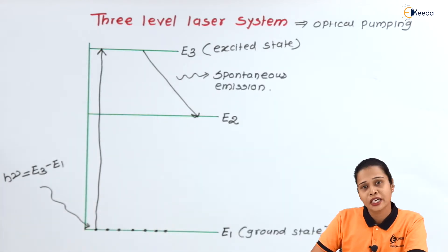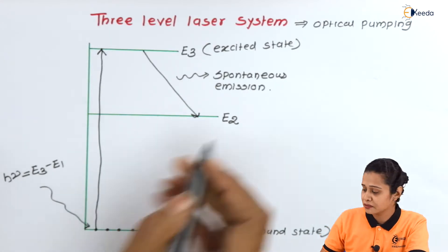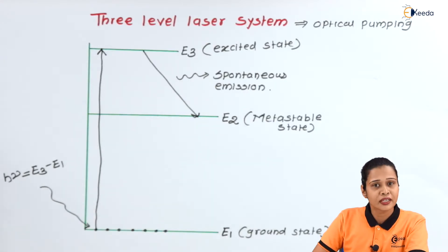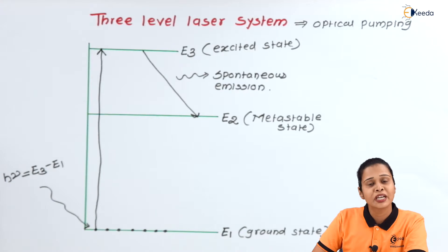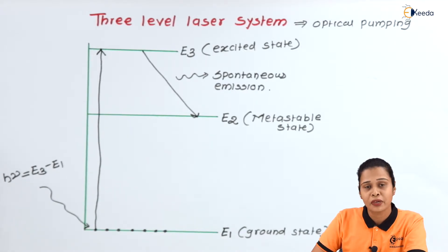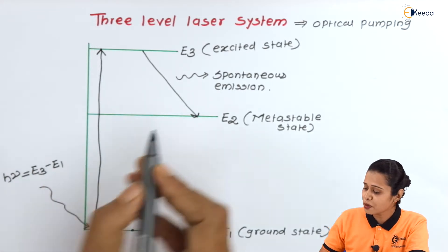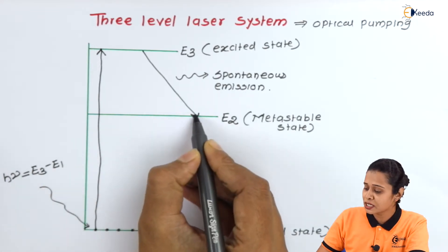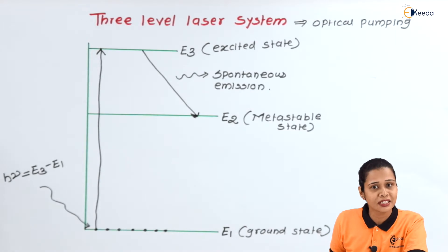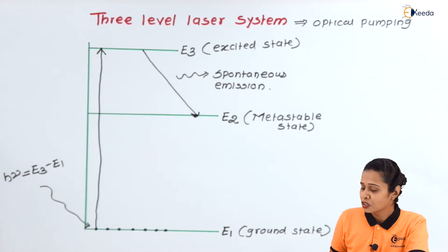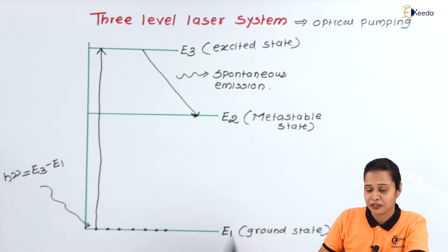E2 is again an excited state, but that excited state is a metastable state. The metastable state is that excited state where particles spend more time — particles spend there some milliseconds. So, the first particle of the system will come here into the metastable state and will spend some time here.